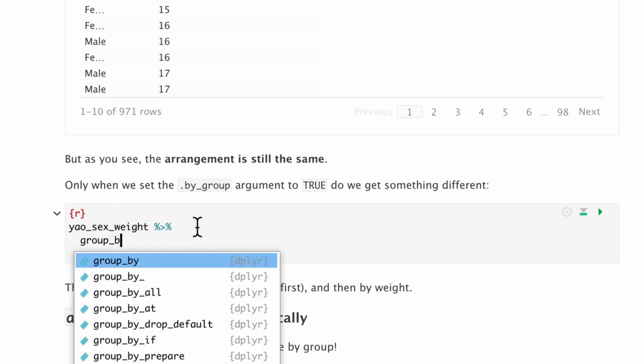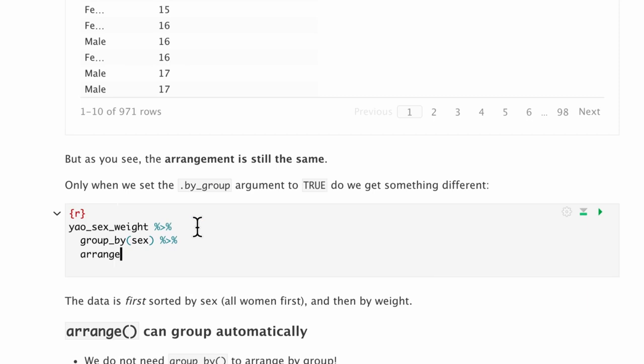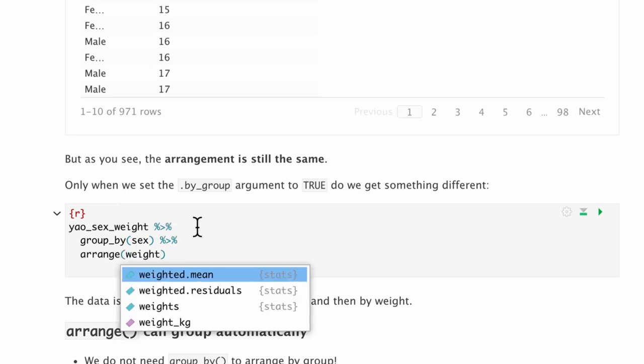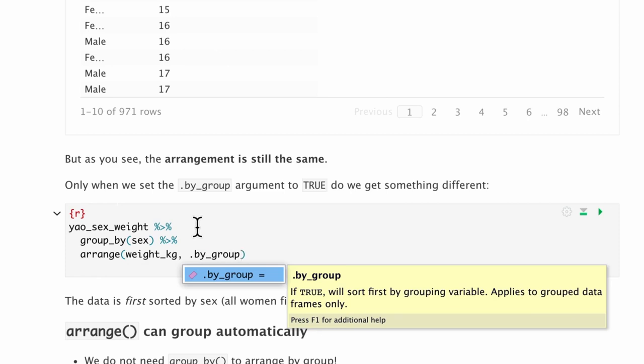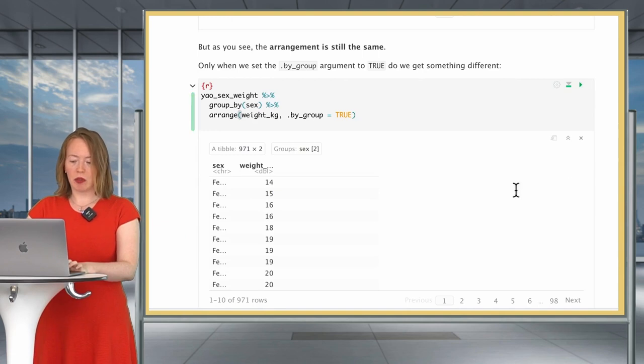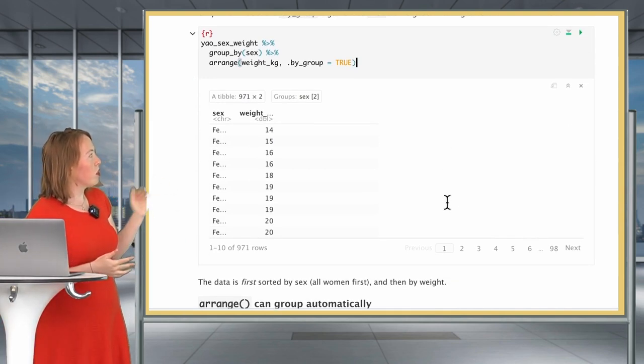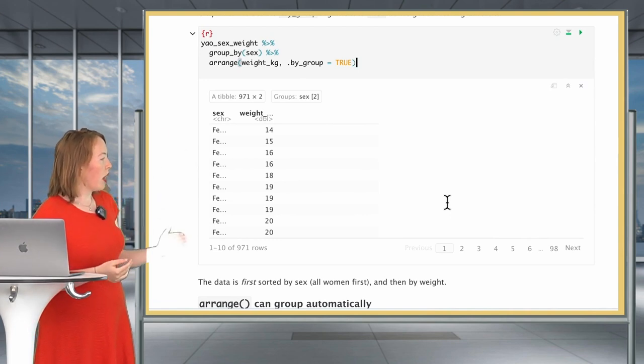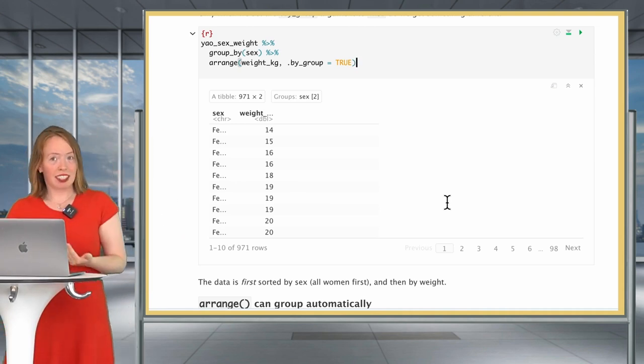Let's imagine we group by sex and then we arrange by weight kilogram. Well, actually, what you can see is that the arrangement is still the same. We still have exactly the weights ordered in the same way, even though we grouped our data.